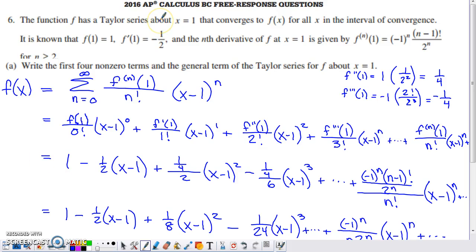This is problem number six from the 2016 AP Calc BC exam, a non-calculator question. As problem number six typically has been for the last handful of years, you see a series question here. The function f has a Taylor series about x=1 that converges to f for all x within the interval of convergence. We know that f(1) = 1, f'(1) = -1/2, and for the nth derivative evaluated at one, we can use this formula: f^(n)(1) = (-1)^n * (n-1)! / 2^n for n ≥ 2.